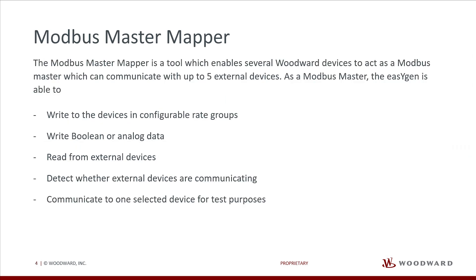The Modbus Master Mapper is a tool which enables several Woodward devices to act as a Modbus Master, which can communicate with up to five external devices. As a Modbus Master, the EasyGen is able to write to devices in configurable rate groups, write boolean or analog data, read from external devices, detect whether external devices are communicating, and communicate to one selected device for test purposes.